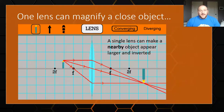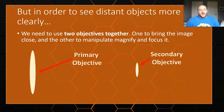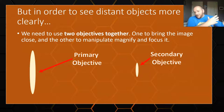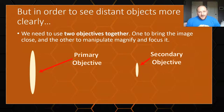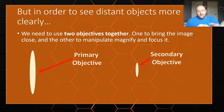The only way we can really use lenses effectively is to use them together. We need multiple objectives. The large one — the primary objective — gets our light gathered and that image up relatively close. Then our secondary objective can do the magnification. What you're literally doing with that primary objective is bringing the image up inside the focal length of the second one, so you can actually magnify it there.